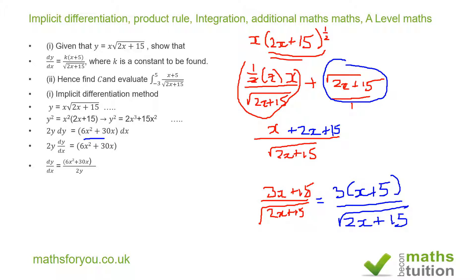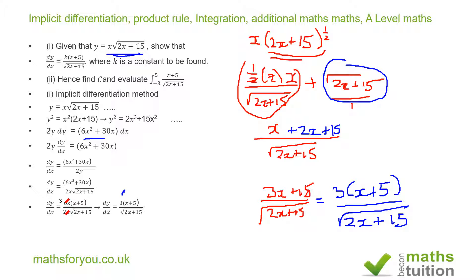Notice there's no chain rule needed so far — it's straightforward. We know y equals x times the square root of 2x plus 15, so substituting: dy/dx equals 6x squared plus 30x divided by 2x times the square root of 2x plus 15. Factorizing the numerator gives 6x times x plus 5. Dividing numerator and denominator by 2x, we get 3 times x plus 5 over the square root of 2x plus 15, confirming k equals 3.